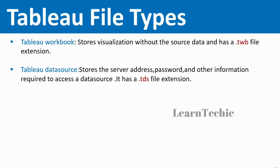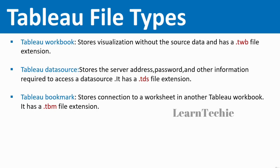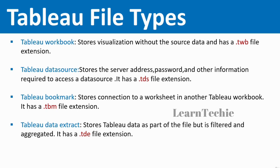The third file type is the Tableau Bookmark (.tbm), which stores a connection to a worksheet in another Tableau workbook. Rather than copying the sheet over, you create a live link to the other workbook, and the bookmark updates the data any time you view that worksheet. The fourth is the Tableau Data Extract (.tde), which stores Tableau data that is filtered and aggregated — only a portion of the data is stored rather than all individual rows from the source.